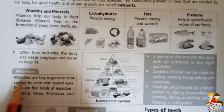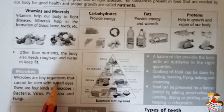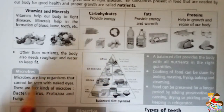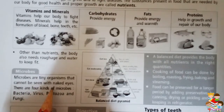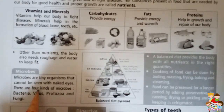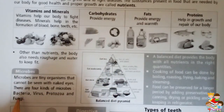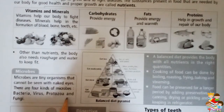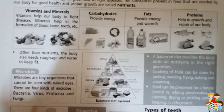Microbes are tiny organisms that cannot be seen without the naked eye. There are four kinds of microbes: bacteria, virus, protozoa, and fungi.